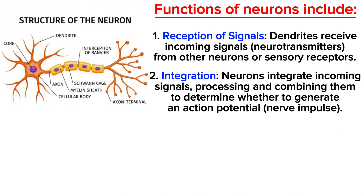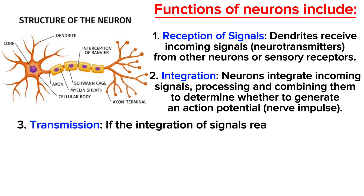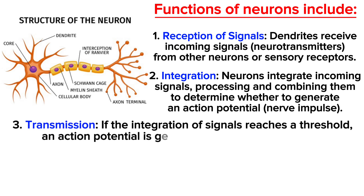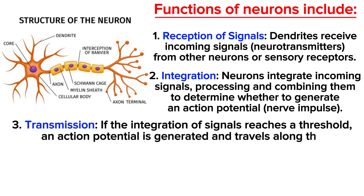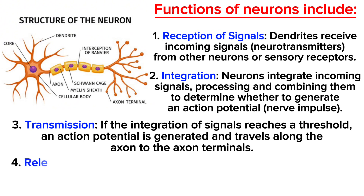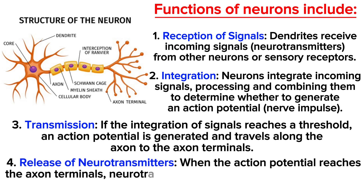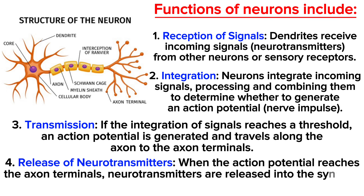The third function is transmission. If the integration of signals reaches a threshold, an action potential is generated and travels along the axon to the axon terminal. The fourth function is release of neurotransmitters — when the action potential reaches the axon terminals, neurotransmitters are released into the synapse to transmit signals to neighboring neurons or target cells.